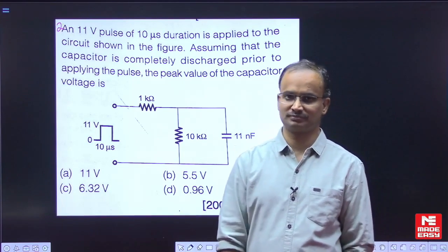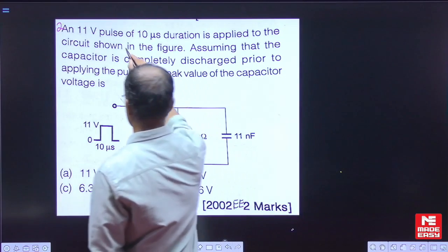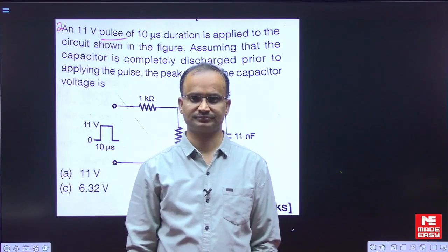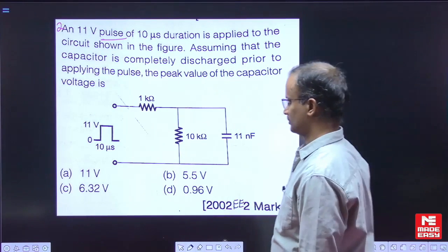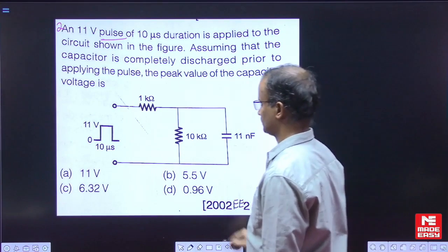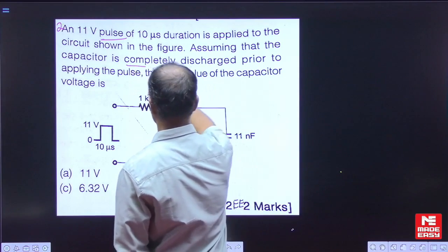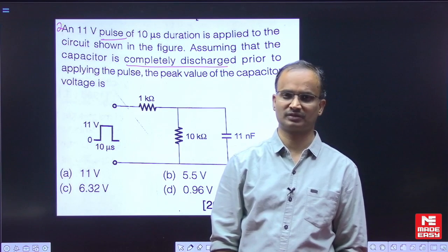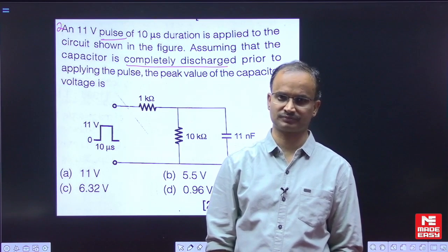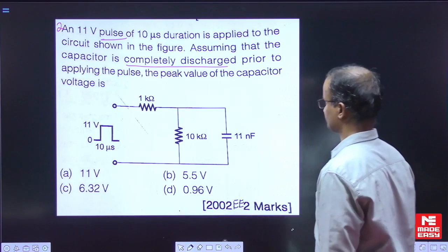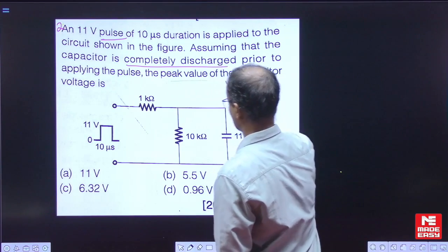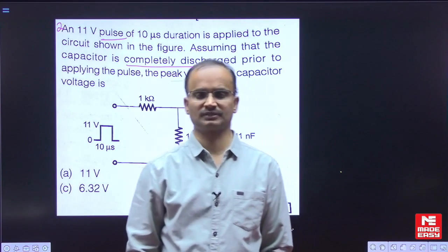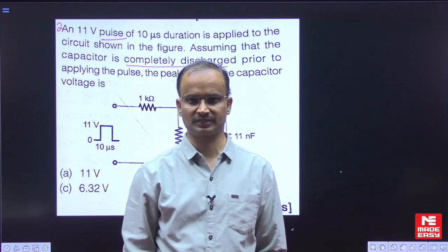In the given example, the input given here is a pulse input. According to the given information, the capacitor is not having any initial value. The requirement is to find the peak voltage of the capacitor. Now let us obtain the general equation for this one.